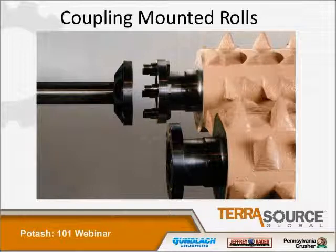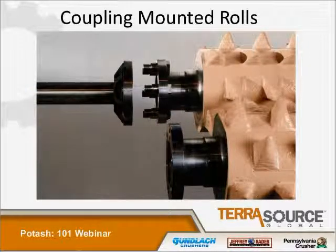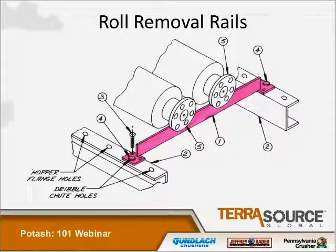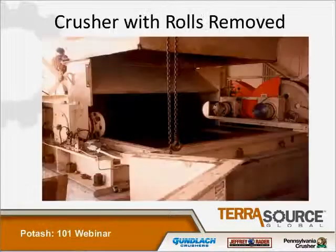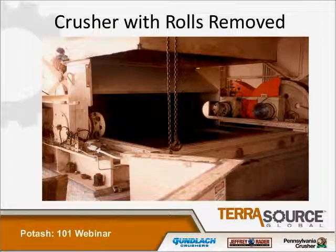A very unique feature that only TerraSource equipment roll crushers have is coupling-mounted rolls, which don't have to disturb the main bearings to get the rolls in and out — a very nice feature. Removal rails are also supplied with the equipment. As you can see, the housing of the crushers is split for ease of roll removal.